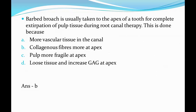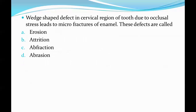Next question: wedge-shaped defects in the cervical region of a tooth due to occlusal stress lead to micro-fractures of enamel. These defects are called — options are: erosion, attrition, abfraction, and abrasion. The correct answer is Option C, abfraction.